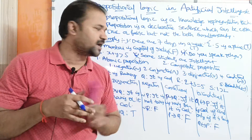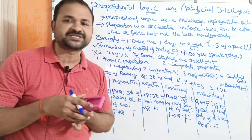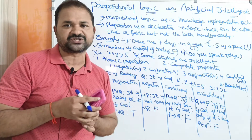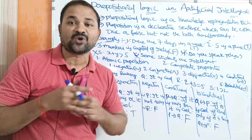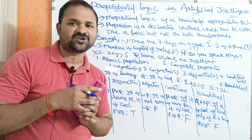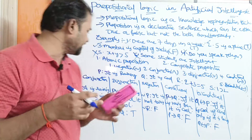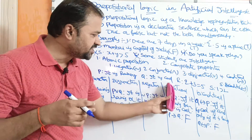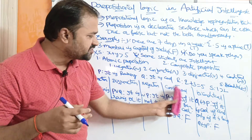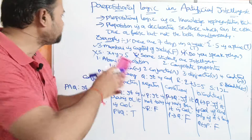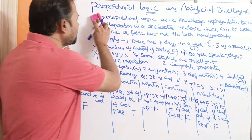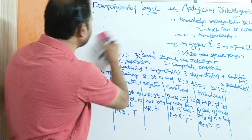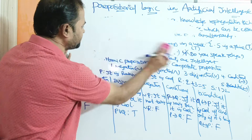Composite propositions are a combination of two or more propositions. We can use logical connectives in them. The logical connectives are: conjunction, disjunction, negation, conditional, and biconditional. So totally we have five logical connectives.